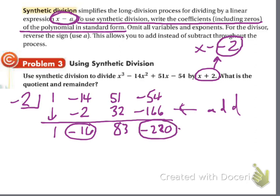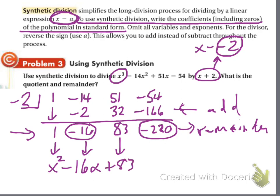The last number you get is always the remainder. The last number is always the remainder. Now the original polynomial was degree 3. When you do synthetic division, these are now the coefficients of a degree 2 polynomial, it's a quadratic. In other words, when you do synthetic division, the degree goes down by 1. So this turns into just x squared, this becomes minus 16x, this becomes plus 83. So that's the quotient right there. And then the negative 220 is the remainder. That's synthetic division, it's actually pretty good, it's very much easier than long division.